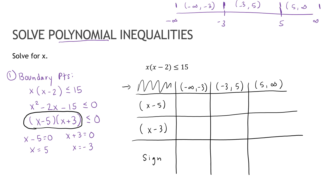I need this expression to be less than or equal to 0, which means I need the sign to be negative. Here's how it works: I need a test point in each interval. For negative infinity to negative 3, I'll choose negative 5. For negative 3 to positive 5, I'll choose 0. And for 5 to infinity, I'll choose 7. The only restriction is don't choose a boundary point itself — choose something strictly between the two values. You can choose different test points and still get the same answer.